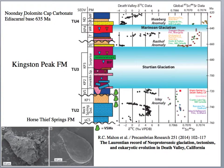At the top we have the Noonday Dolomite, the cap carbonate. The age constraint here is that worldwide it coincides with the base of the Ediacaran fauna. That's where we really start seeing multicellular organisms, soft-bodied organisms building communities — animals really taking off around 635 million years ago — and that corresponds to this Noonday Dolomite.